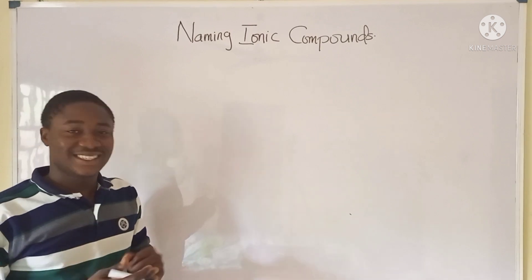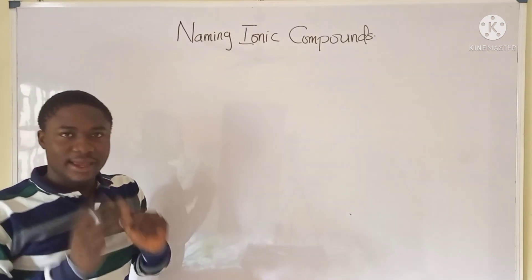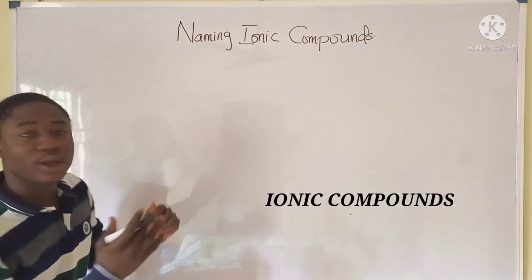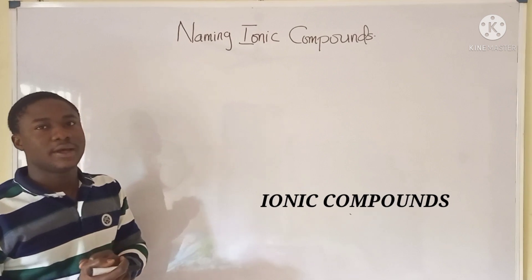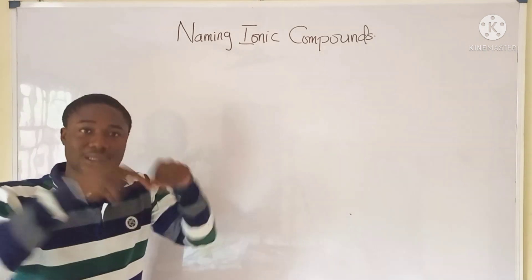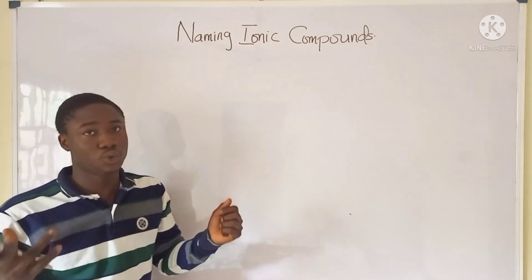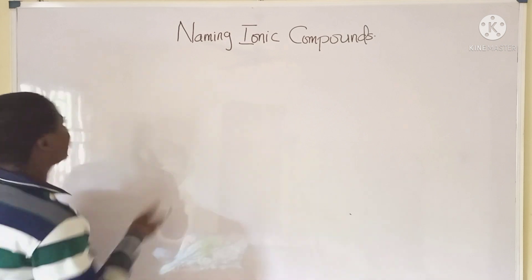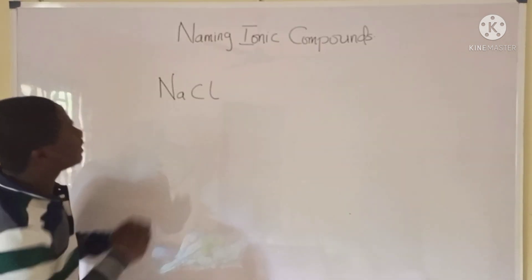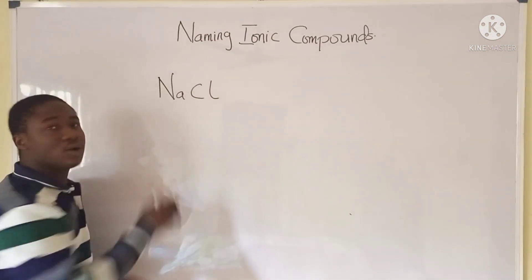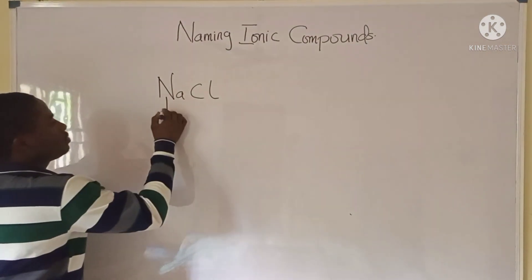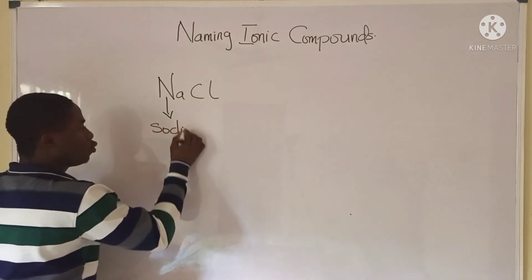Welcome back to Chemistry Made Easy with Brett Eddie. In today's video lesson, I'll be teaching on how to name ionic compounds. Now, what is a compound? A compound is a substance that is made up of two elements. Let's take an example using NaCl. You can see that this is a compound because it comprises of two elements. This is the first element and it is called sodium.